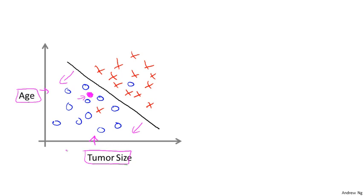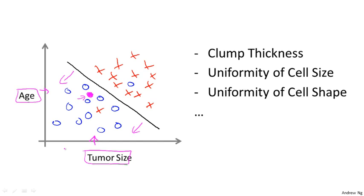In this example, we had two features, namely the age of the patient and the size of the tumor. In other machine learning problems, we will often have more features. And my friends that work on this problem, they actually use other features like clump thickness of the breast tumor, uniformity of cell size of the tumor, uniformity of cell shape of the tumor, and so on.